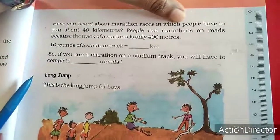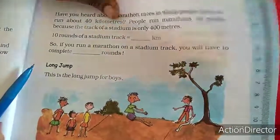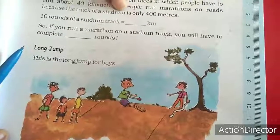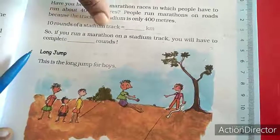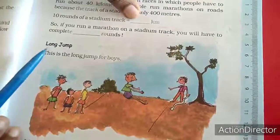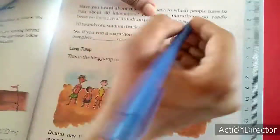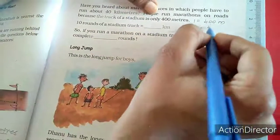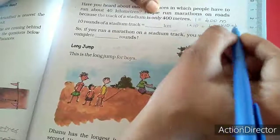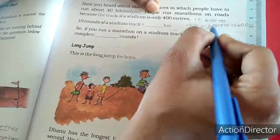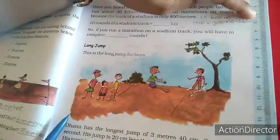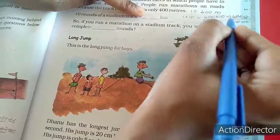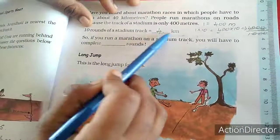Have you heard about marathon races in which people have to run about 40 kilometers? People run marathons on roads because the track of a stadium is only 400 meters. So 10 rounds of the stadium track equals how many kilometers? One round is 400 meters, and 10 rounds means we multiply 400 by 10 — don't consider the zeros, just consider the number and add zeros at the end: that gives 4,000 meters. Dividing by 1,000 gives 4, so 10 rounds of the stadium track equals 4 kilometers.